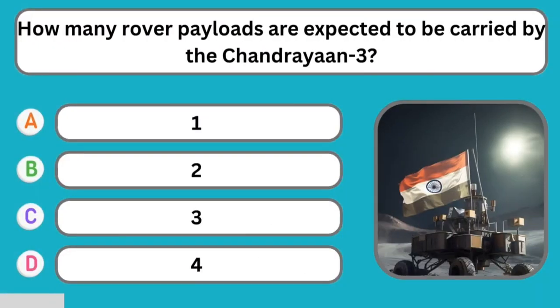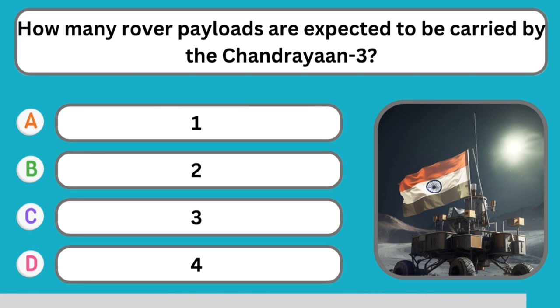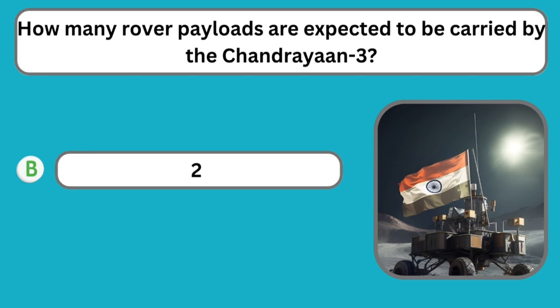Question number twenty-five: How many rover payloads are expected to be carried by Chandrayaan 3? The correct answer is a total of two rover payloads.